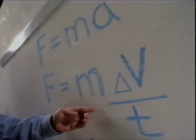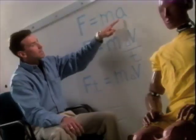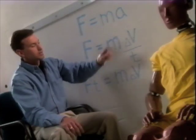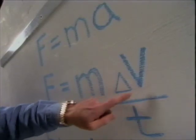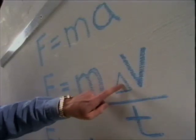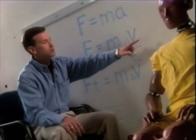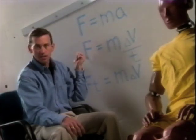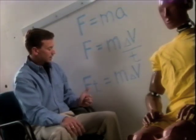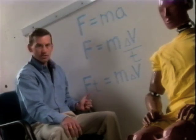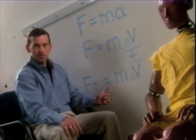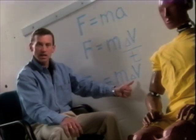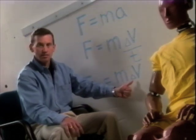Newton wrote it this way — it's the same thing. Acceleration is the rate at which velocity changes. But if I multiply each side of the equation by t, I get force times time equals mass times a change in velocity.